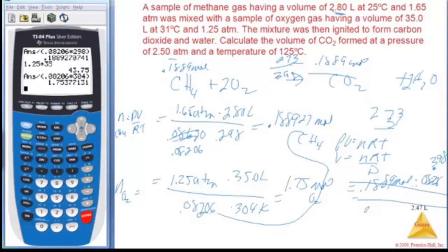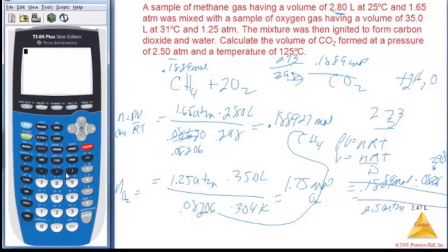Alright, so let's punch this and see what we get. 0.1889 times my R, 0.08206, times 398, equals, divide by 2.5, enter, and I get 2.47 liters. Nice, it's always nice when you get the right answer, isn't it?